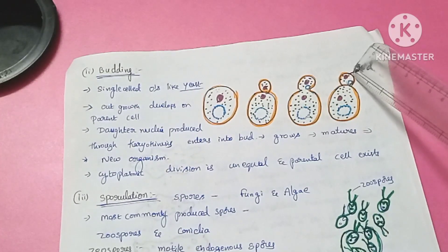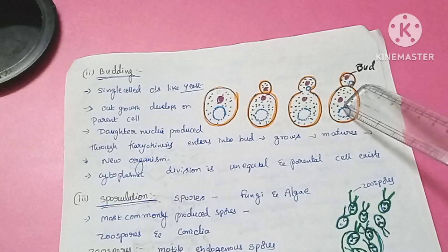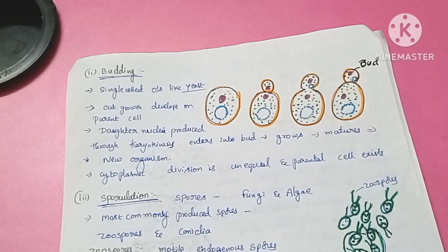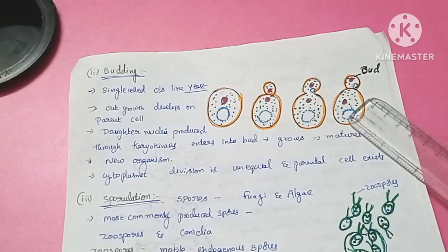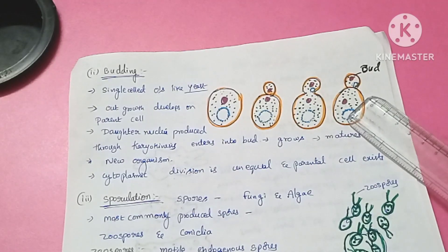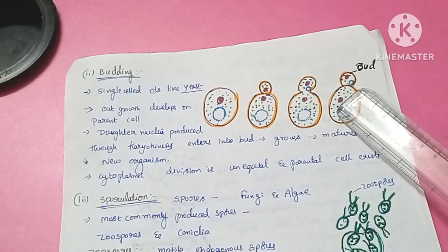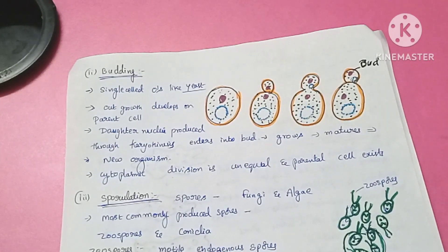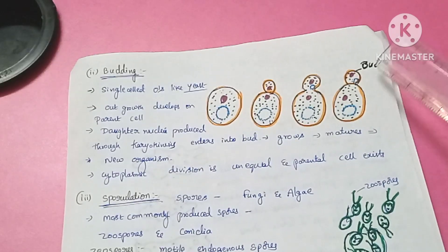This daughter cell will develop into the new organism. In binary fission, the cytoplasmic division is equal, producing two equal daughter cells. But in budding, the cytoplasmic distribution is unequal — this is the main difference between binary fission and budding.